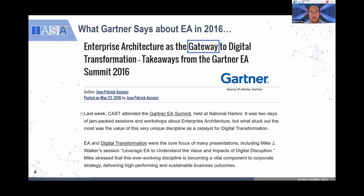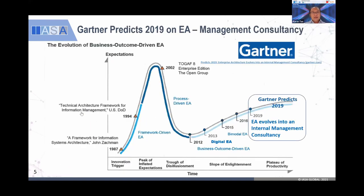That's why many so-called digital transformations didn't turn out well. Gartner made a statement that enterprise architecture is the gateway if you want to have a successful digital transformation. The article is there and you can Google it. Then in 2019, it's very interesting — this is where Gartner, for the first time, made a prediction on enterprise architecture.